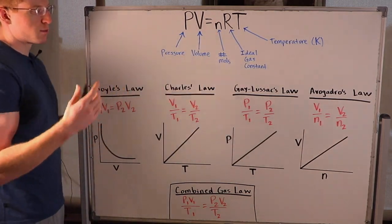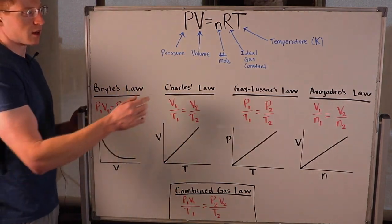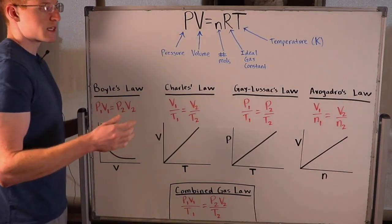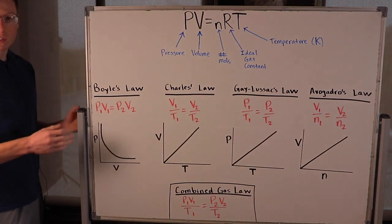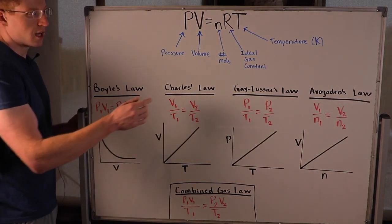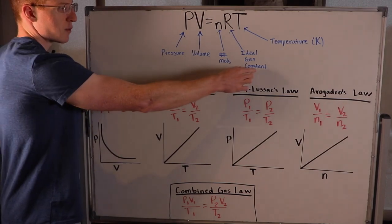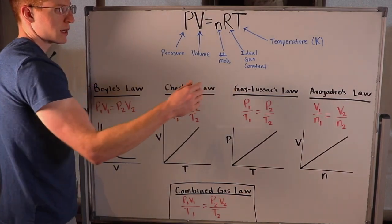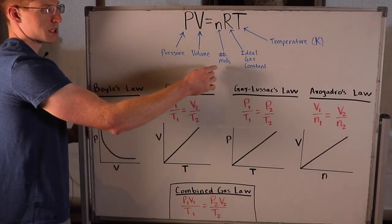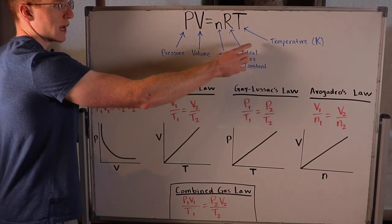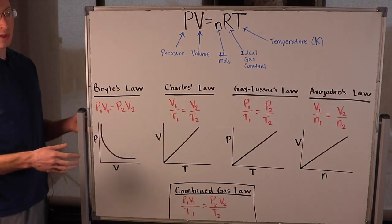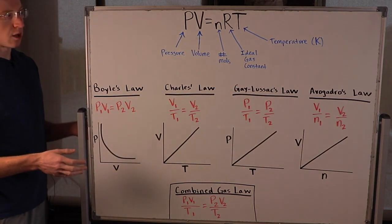N is the number of moles of gas you have. R is the ideal gas constant — it doesn't change, and there are many different forms of it depending on the units you need to match up with everything else in your equation. And T is the temperature, and this has to be in Kelvin.